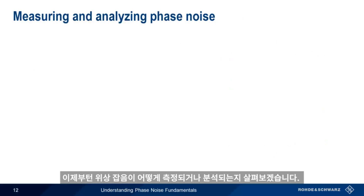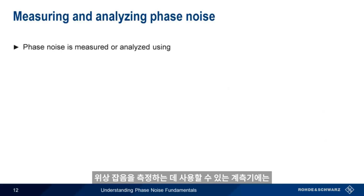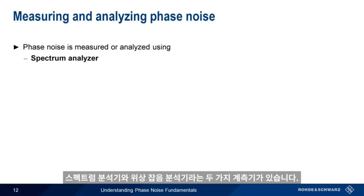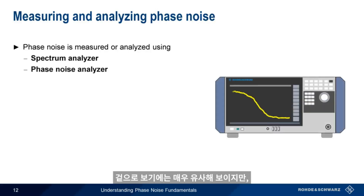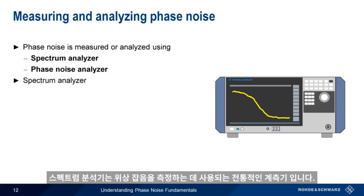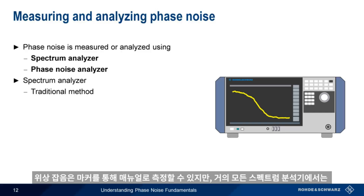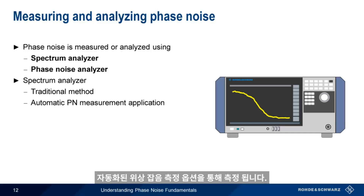Now let's look at how phase noise is measured or analyzed. There are two types of instruments that can be used to measure phase noise — spectrum analyzers and phase noise analyzers. Outwardly, these instruments often look very similar and display results in similar ways, but there are important differences between them. Spectrum analyzers are the traditional tool used for measuring phase noise, and in almost all cases, phase noise measurements on spectrum analyzers are performed using an automated phase noise measurement application or option.